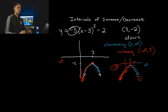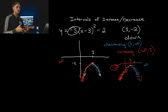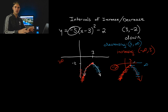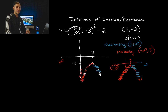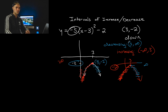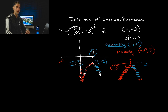So to summarize: what's kind of confusing about intervals of increase and decrease is that you look at the behavior of the y values to determine whether the function is increasing or decreasing from left to right, but you write the intervals in terms of the x values. For example, the vertex was at (3, −2), but that negative two never appeared in the interval notation — only the x value of three did.